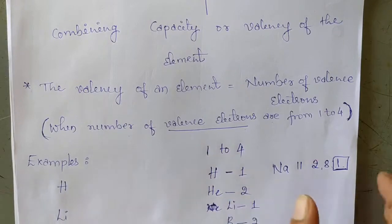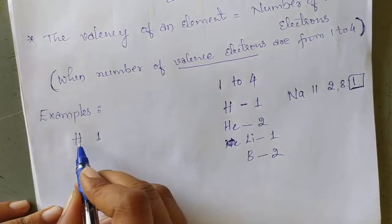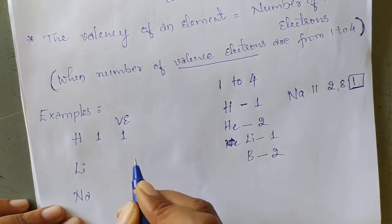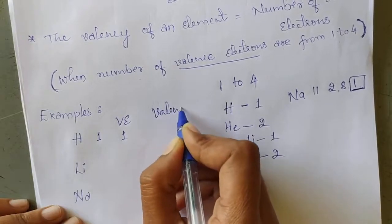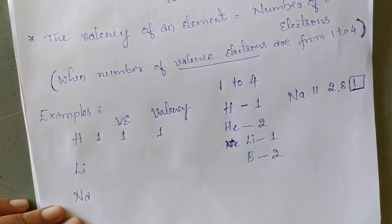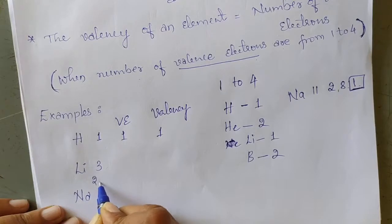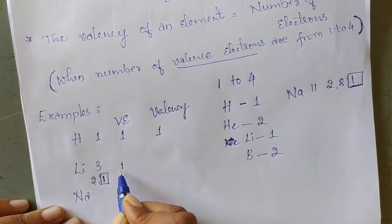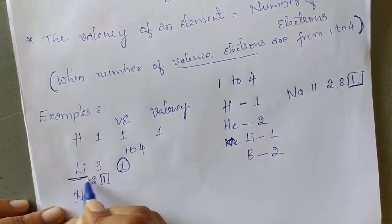For example, if you see hydrogen, its valence electron is 1. Its value is in between 1 to 4. Therefore its valency is 1. Next, lithium — its atomic number is 3 and its electron distribution is 2, 1. So in its outermost shell it has 1 electron. Number of valence electrons is 1, which is in between 1 to 4. Therefore the valency of lithium is 1. If you see sodium, its atomic number is 11 and its electron distribution is 2, 8, 1. In its outermost shell, it has 1 electron. So number of valence electrons is 1. Therefore, its valency is 1.